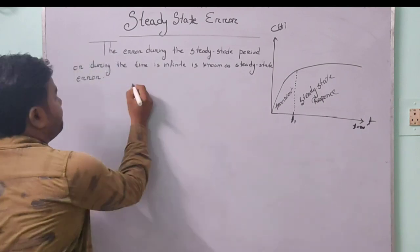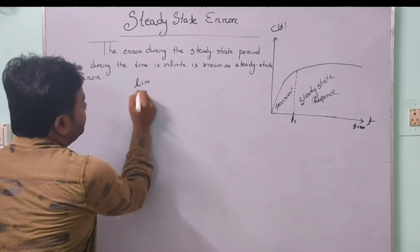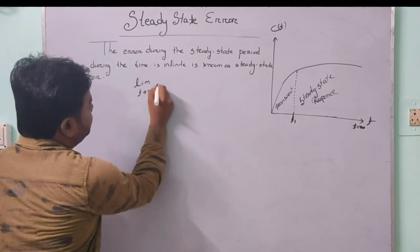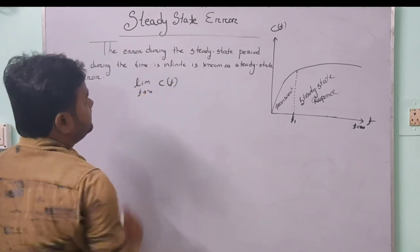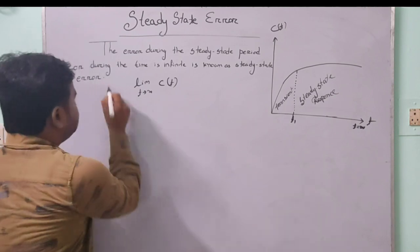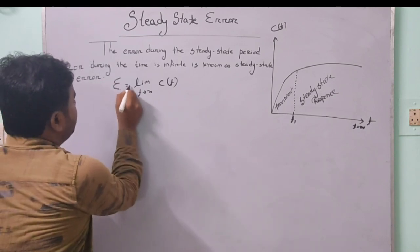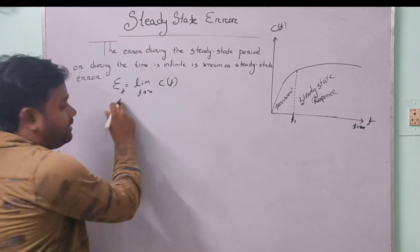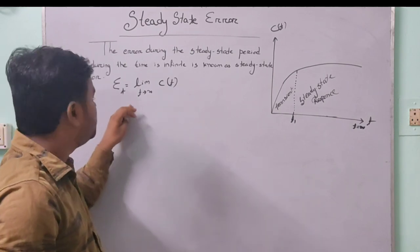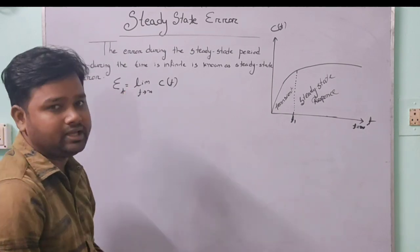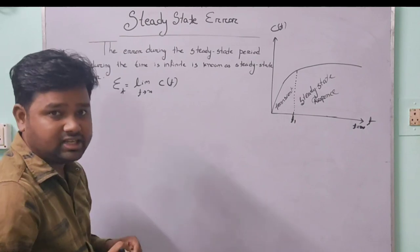That means the steady state error is defined as: limit t tends to infinity of e(t). That is, the error when time tends to infinity — the limit t tends to infinity of e(t) is the steady state error.